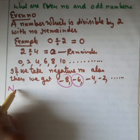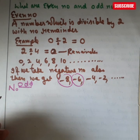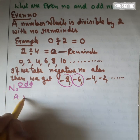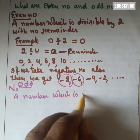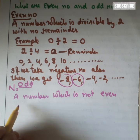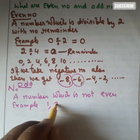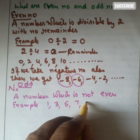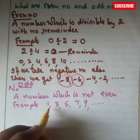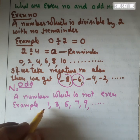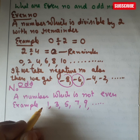Next we are going to discuss odd numbers. A number is odd — for example, 1, 3, 5, 7, 9. You can say that if a number is divided by two and you get some remainder, then you can say the number is an odd number.